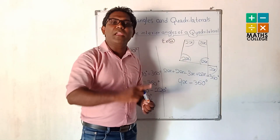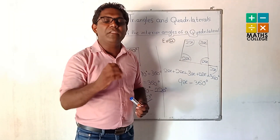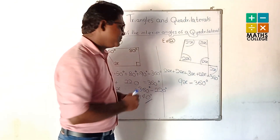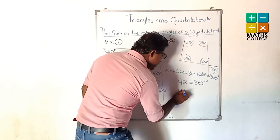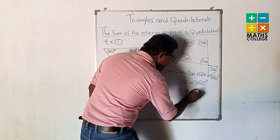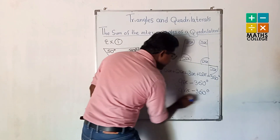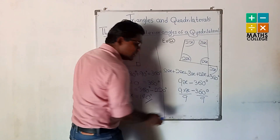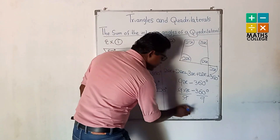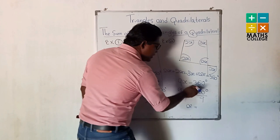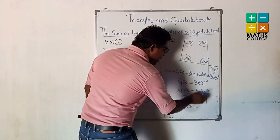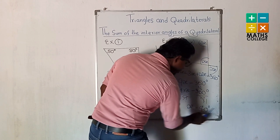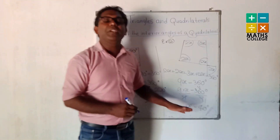9x = 360. The opposite operation is division. Dividing both sides by 9: 9 and 9 cancel, x remains. Therefore x = 360 ÷ 9 = 40 degrees.